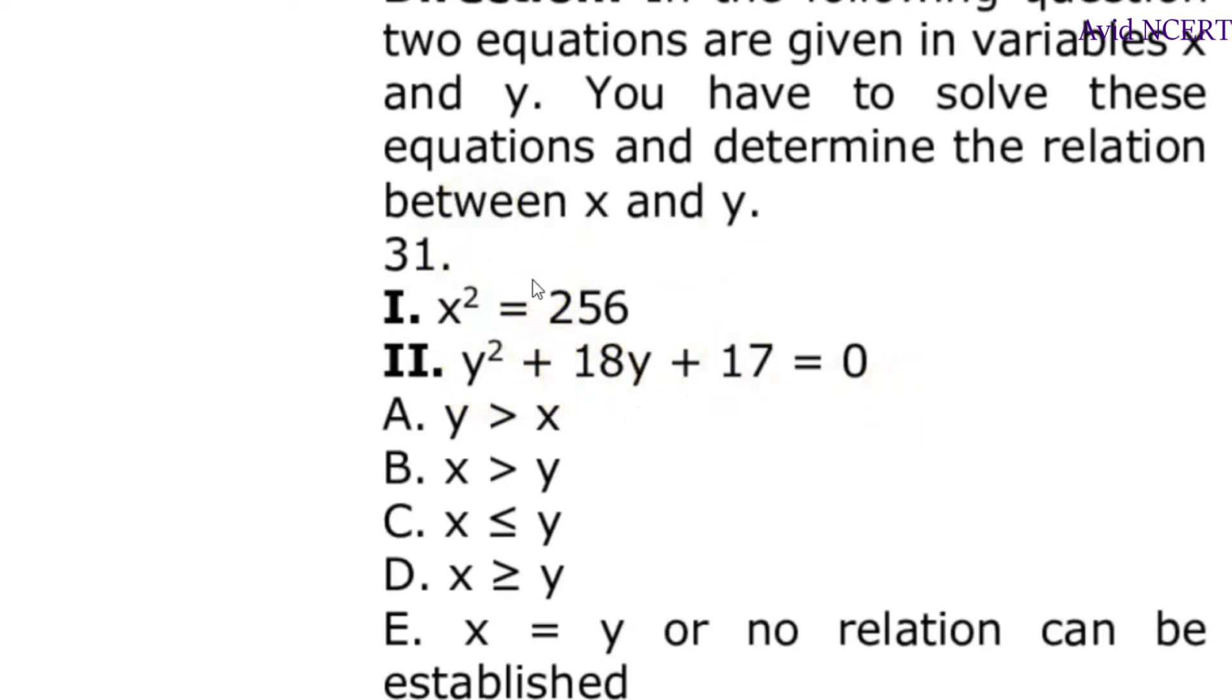From this we have to find x, so x² = 256, which means x = 16, since 16 times 16 is 256. So x = +16 and -16. And here it is y² + 18y + 17.